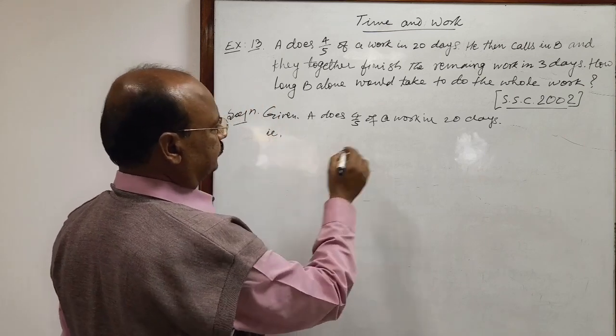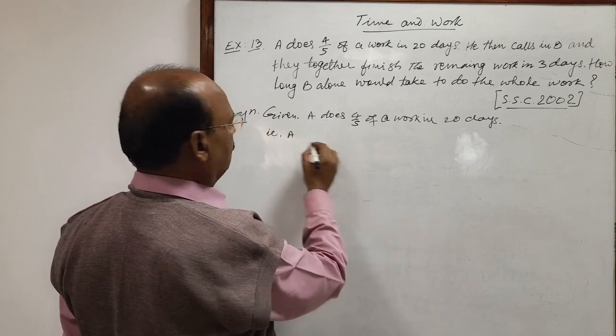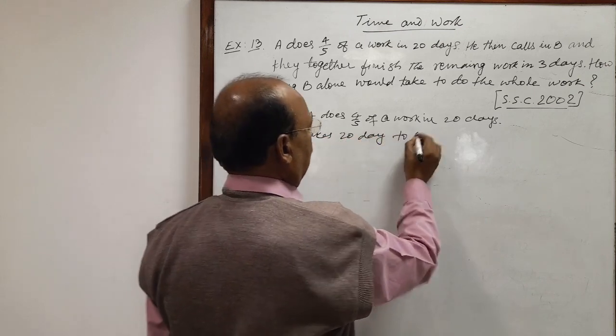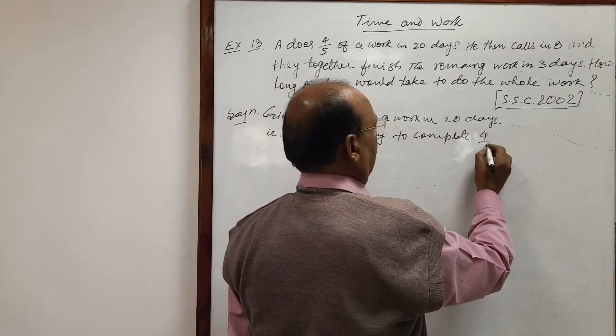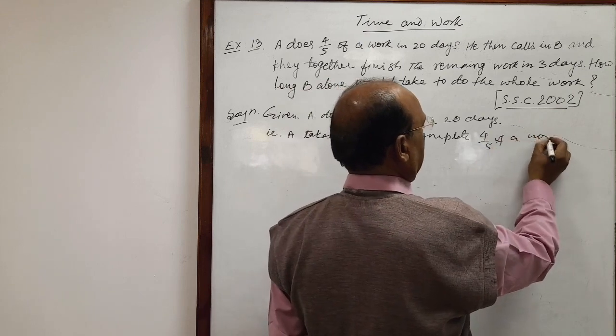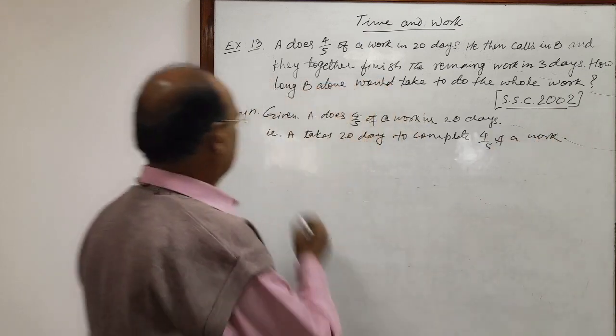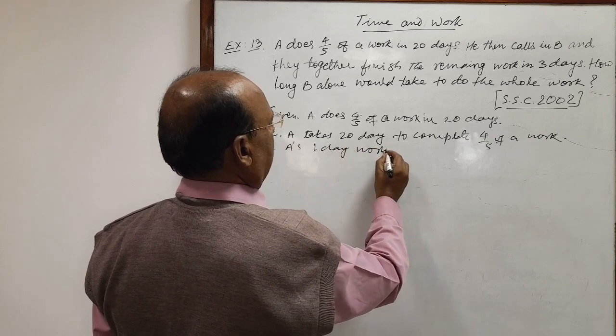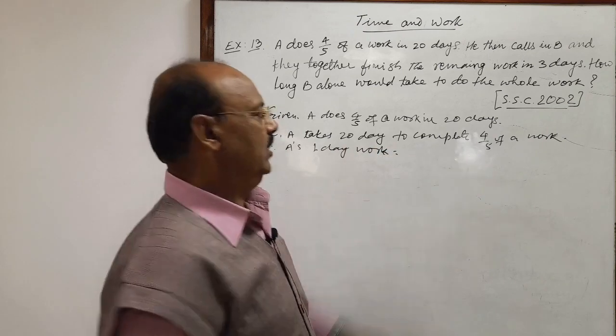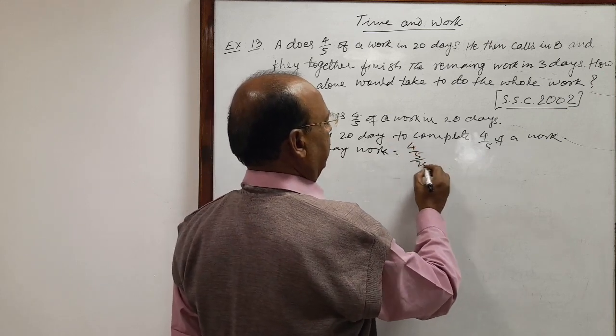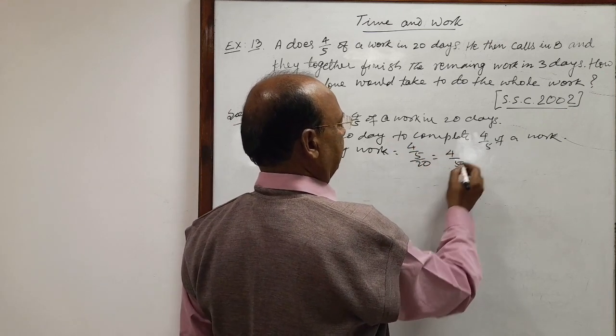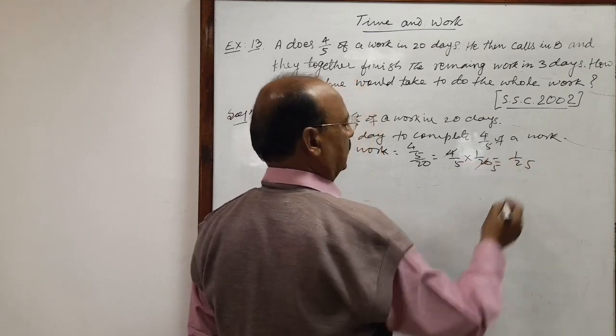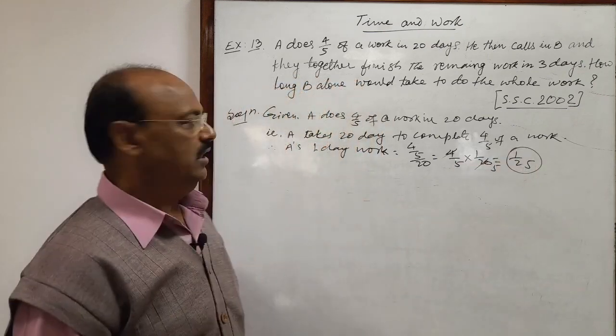That is, A takes 20 days to complete 4 by 5 of a work. Therefore, A's one day work will be how much? This is 20 days work, so one day work is 4 by 5 divided by 20, and this is 4 by 5 into 1 by 20, and this is equal to 1 by 25. This is the amount of work done by A in 1 day.